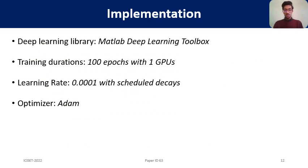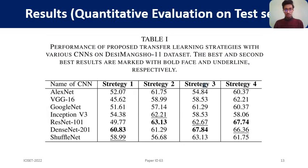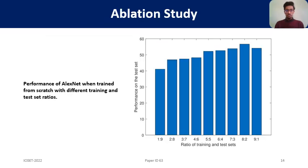We implemented our experiments using the MATLAB Deep Learning Toolbox, training CNN models with the appropriate transfer learning strategy for 100 epochs on a single GPU. We used learning rate decay and the Adam optimizer. From the results, our third strategy — fine-tuning the last 50% of CNN layers — achieves better performance than the others. We highlight the best results in bold and the second best with underline. Among the CNNs, ResNet, DenseNet, and ShuffleNet perform the best. We also conducted an ablation study varying training ratios using AlexNet, and found that larger data samples are needed for better performance.